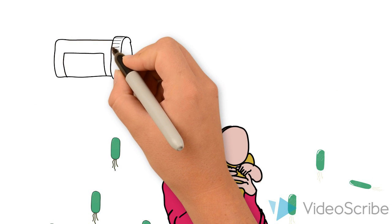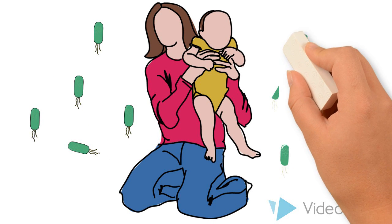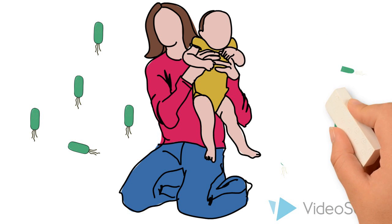Adults have a relatively stable community of bacteria in their gut, children not so much, and that makes them more vulnerable to the effects of antibiotics.